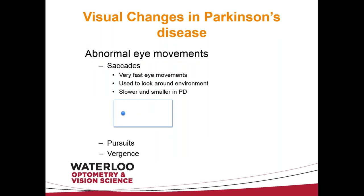I've studied eye movements for a large portion of my career. The eye movements that are abnormal in Parkinson's disease include saccades, pursuits, and vergences. There are a few other eye movements but we're not going to talk about those today.